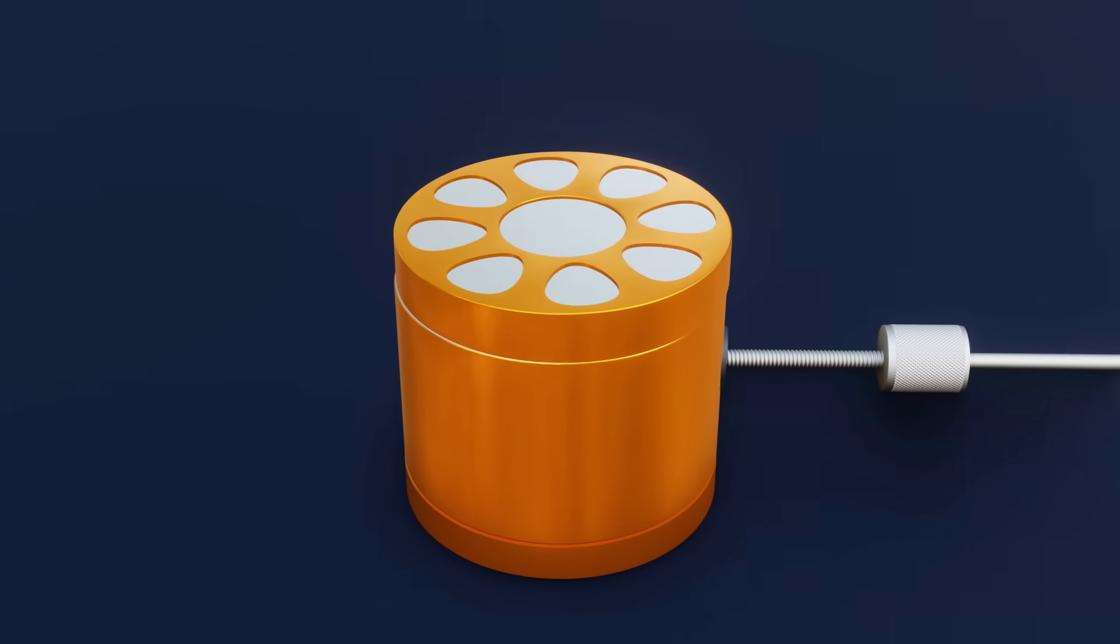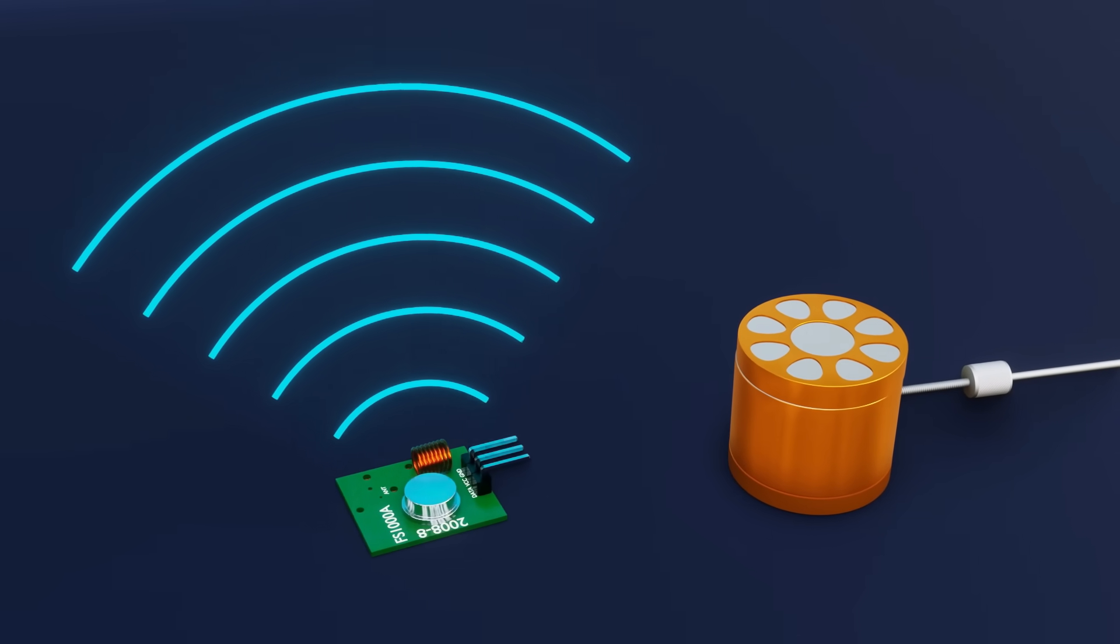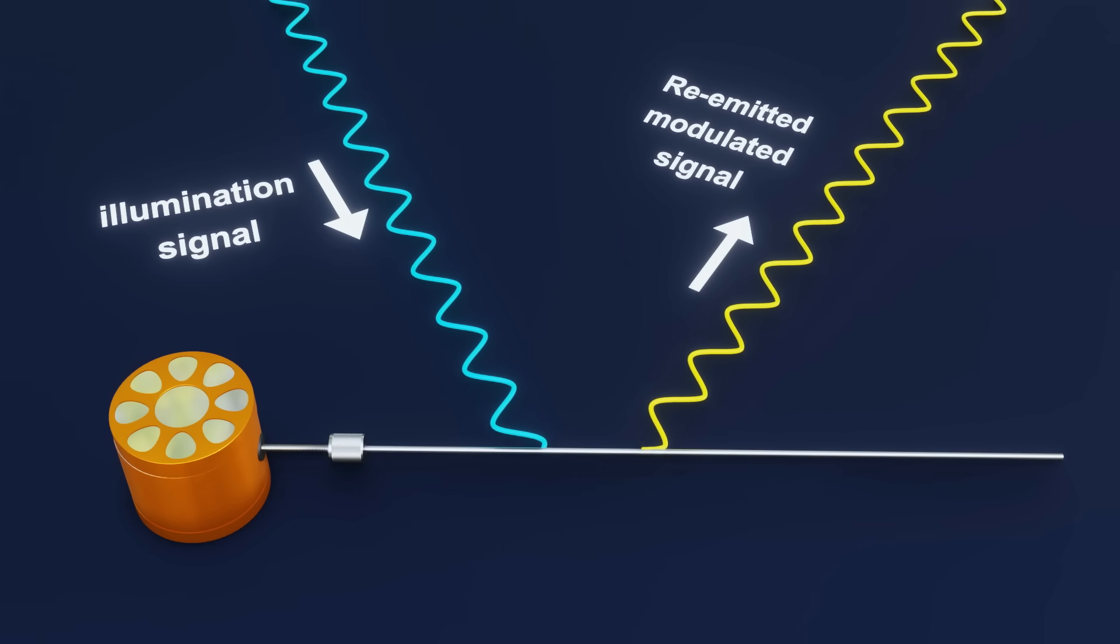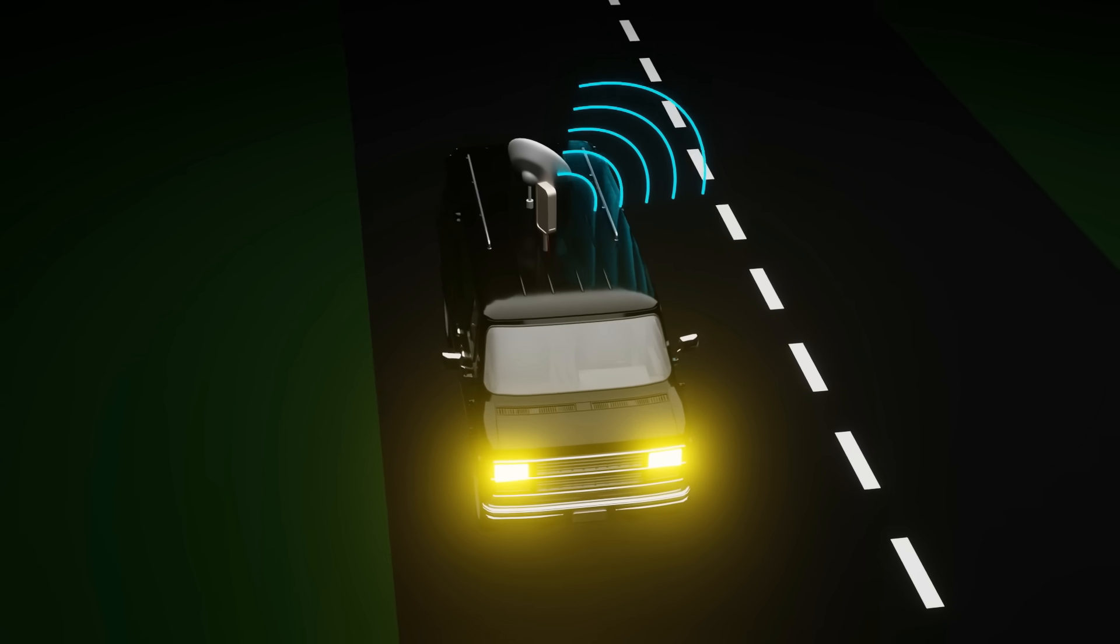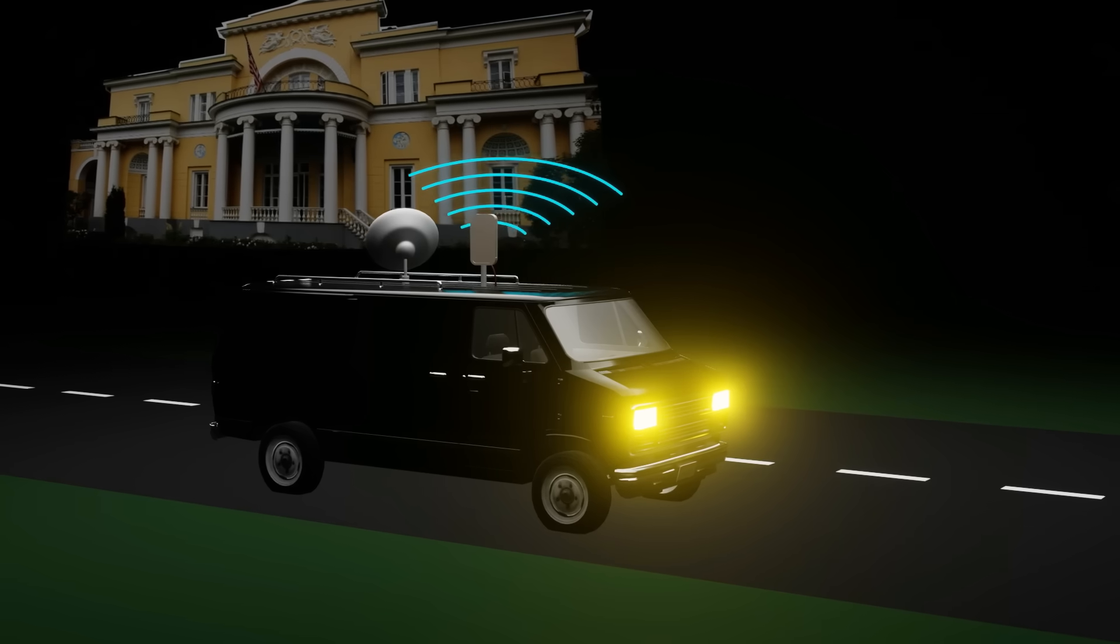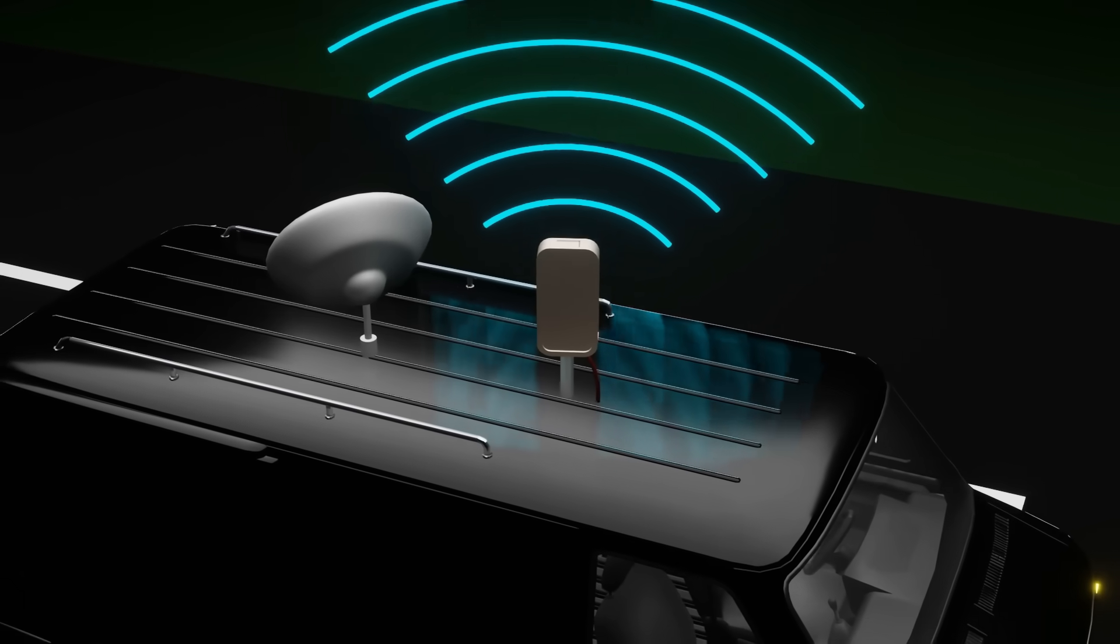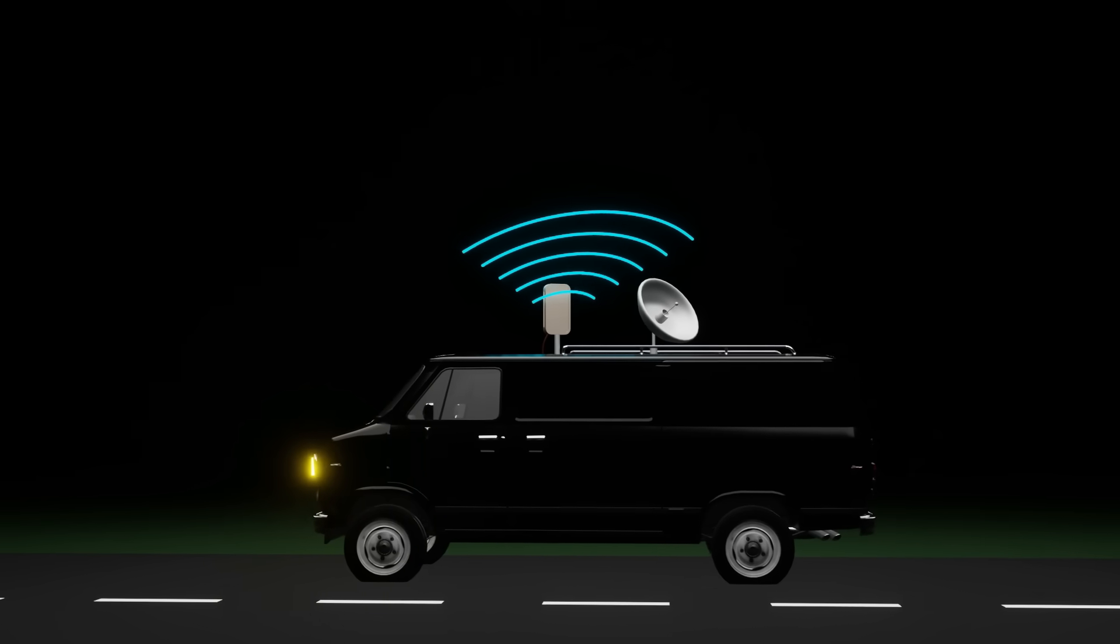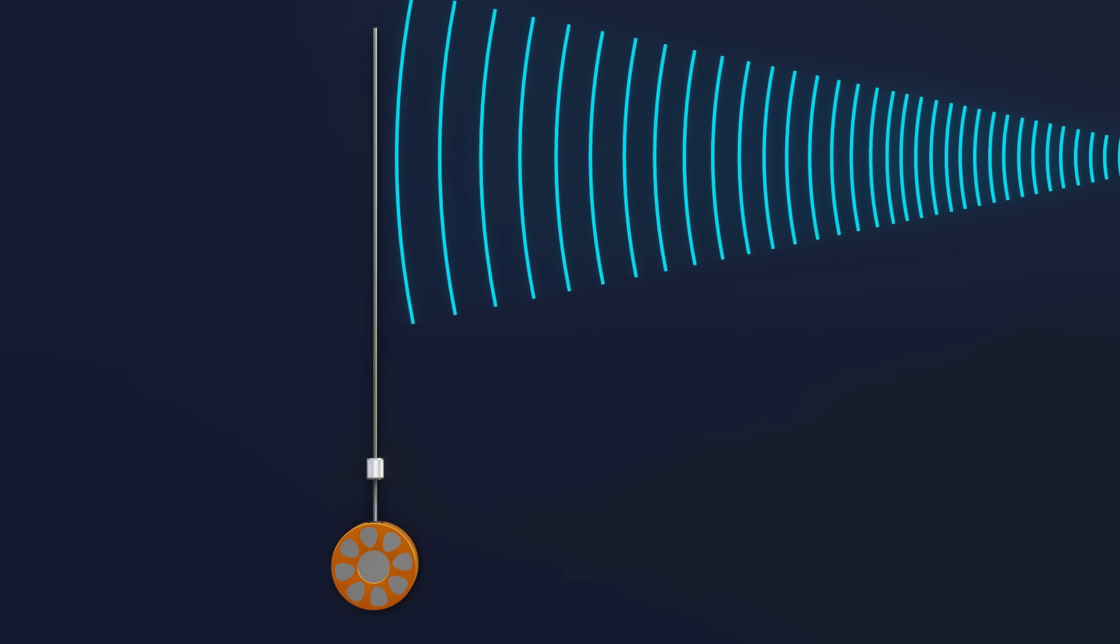But how did the thing transmit conversations? Unlike conventional radio transmitters, the thing didn't generate its own signals. Instead, it reflected external radio waves, embedding conversations into the returning signal. The Soviets activated the bug remotely by transmitting a high-frequency radio beam toward the U.S. Ambassador's office. This signal, likely in the ultra-high frequency range between 800 MHz and 1.5 GHz, was similar to the frequencies used in modern RFID systems.